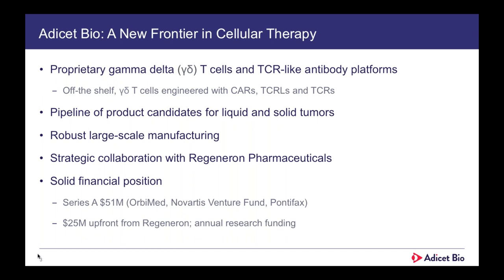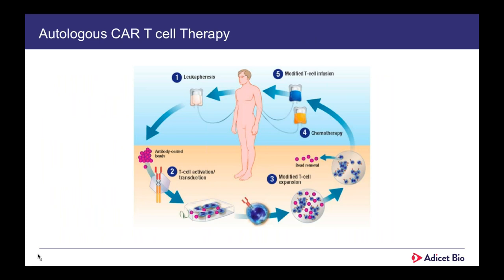I'll start with a little background about who Adeset is. We are developing an off-the-shelf gamma delta T cell product composed of engineered gamma delta T cells with CARs, TCRLs, or TCRs. We are developing a pipeline of products ranging from liquid and solid tumors, and we've developed a robust large-scale manufacturing platform. We have a strategic collaboration with Regeneron Pharmaceuticals, including annual research funding, and we have a solid financial position with a Series A of about $51 million plus $21 million from Regeneron, allowing us to develop this next phase of cell therapy products efficiently.